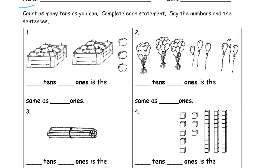These are groups of ten. So two tens, three ones, is the same as twenty-three ones.